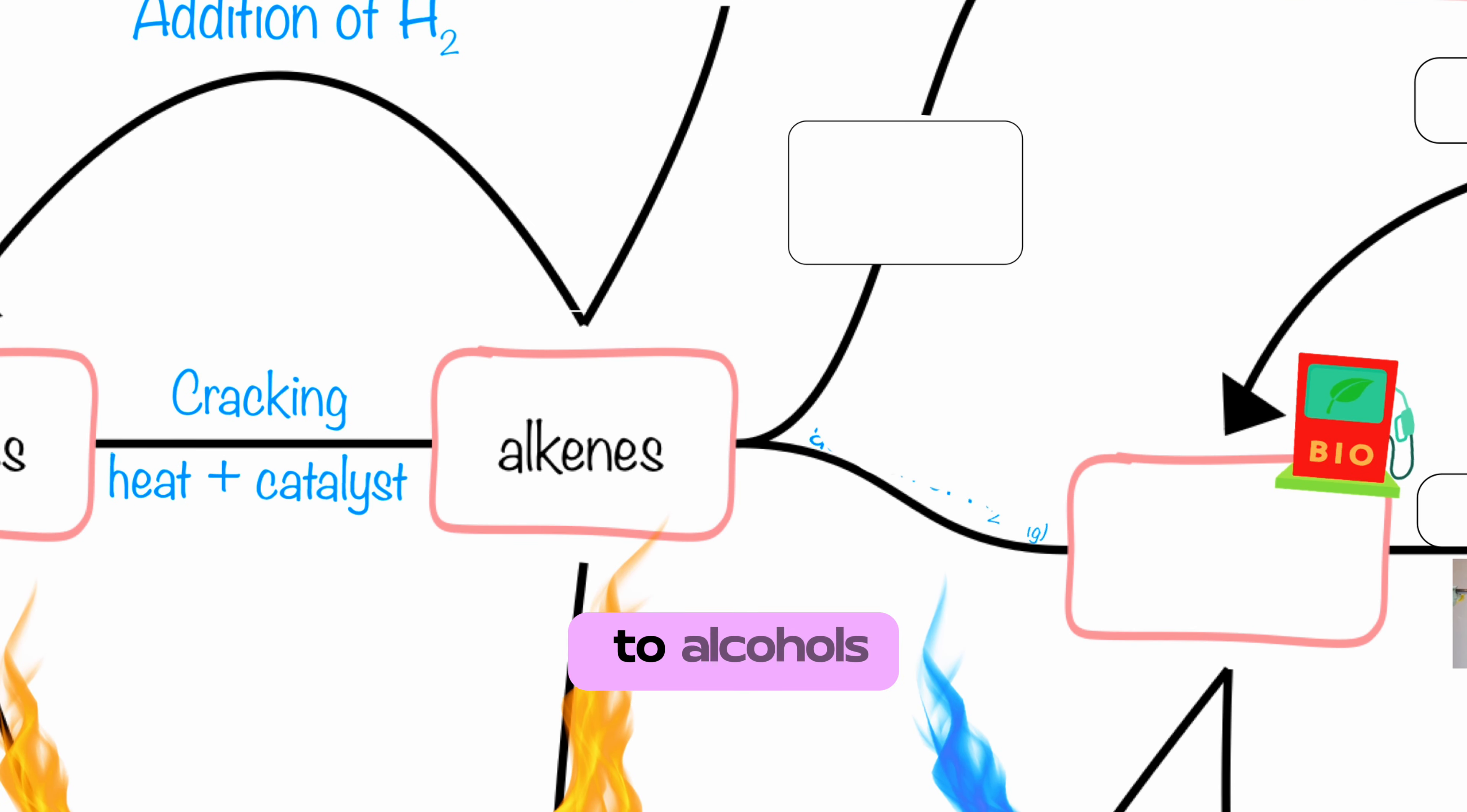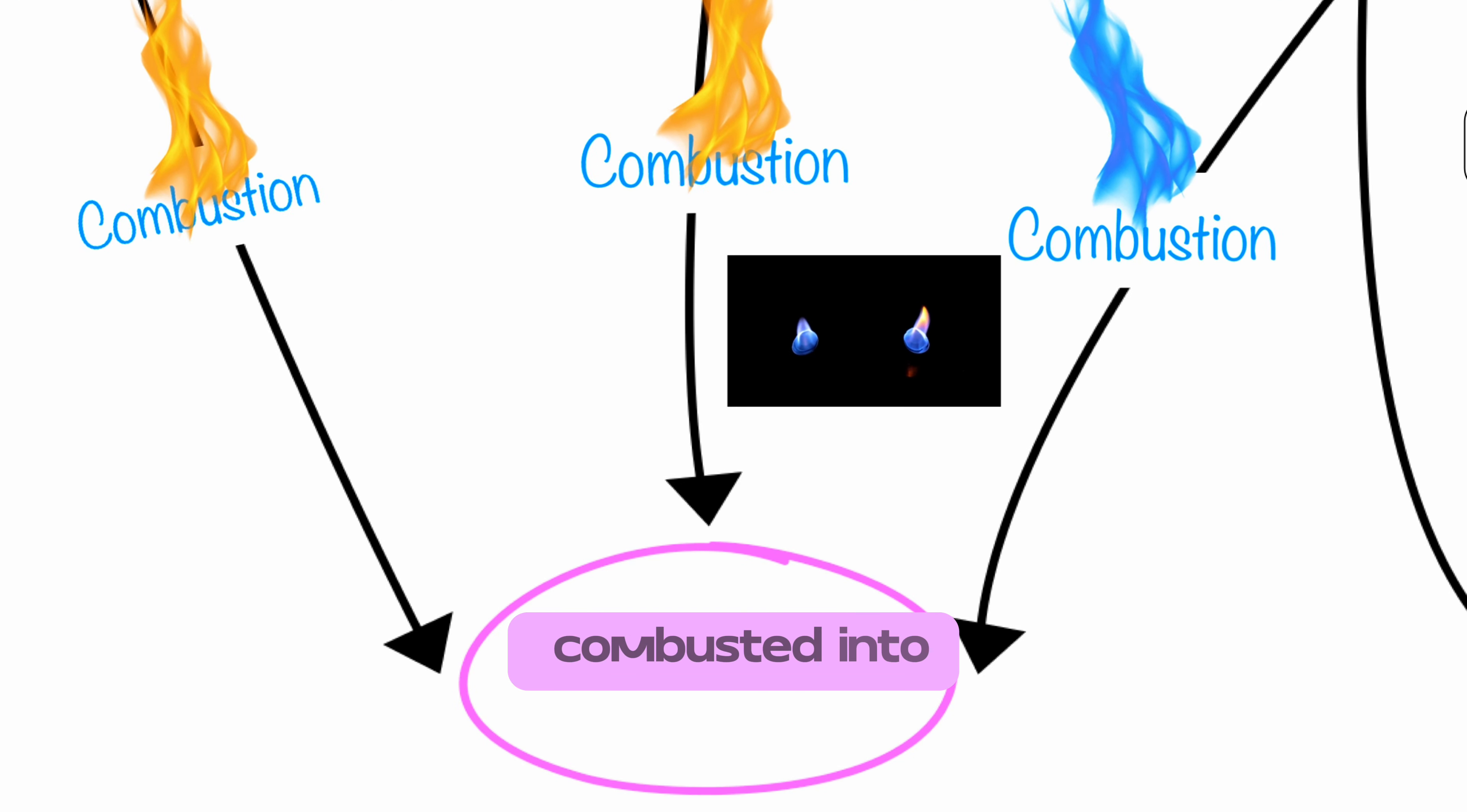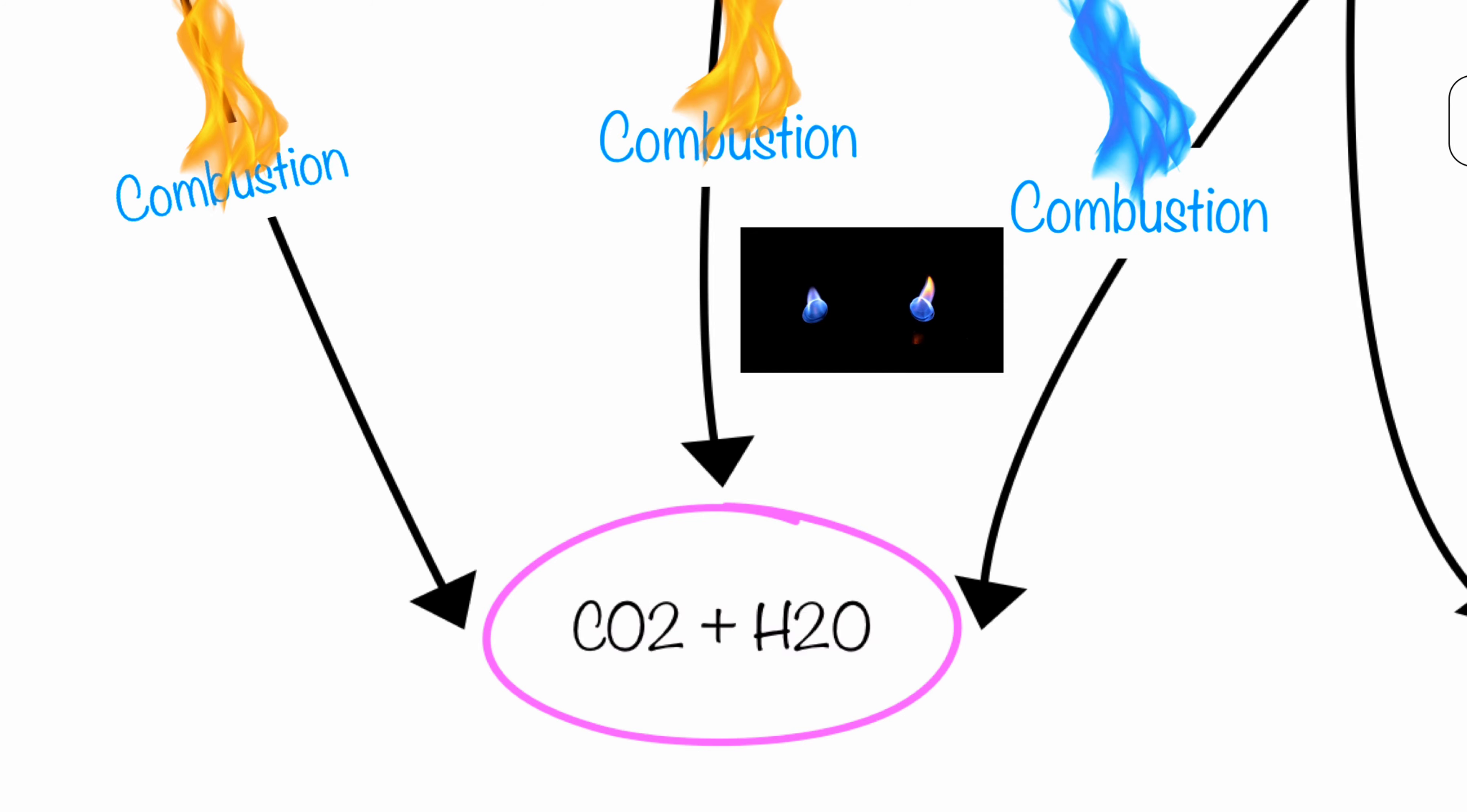Alkenes can also be converted to alcohols. This reaction is known as hydration, which is the addition of steam to alkenes. Hydrocarbons and alcohols can be burned or combusted into carbon dioxide and water.